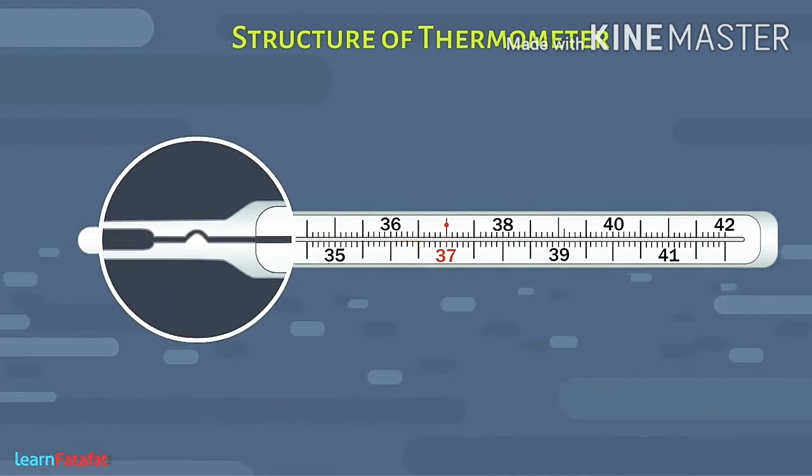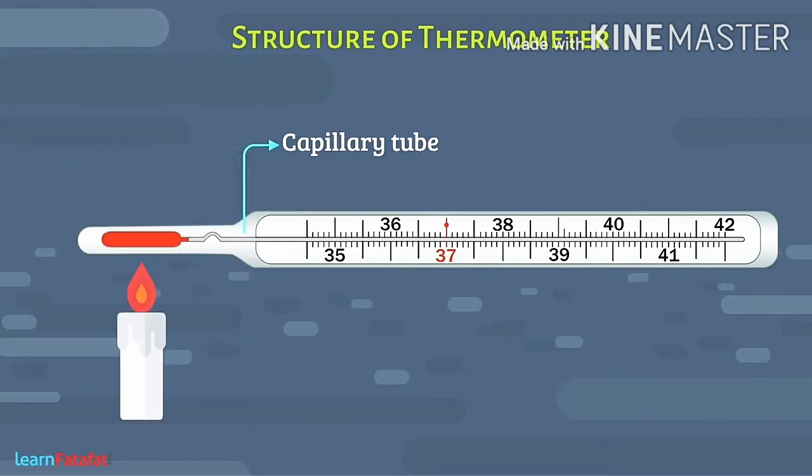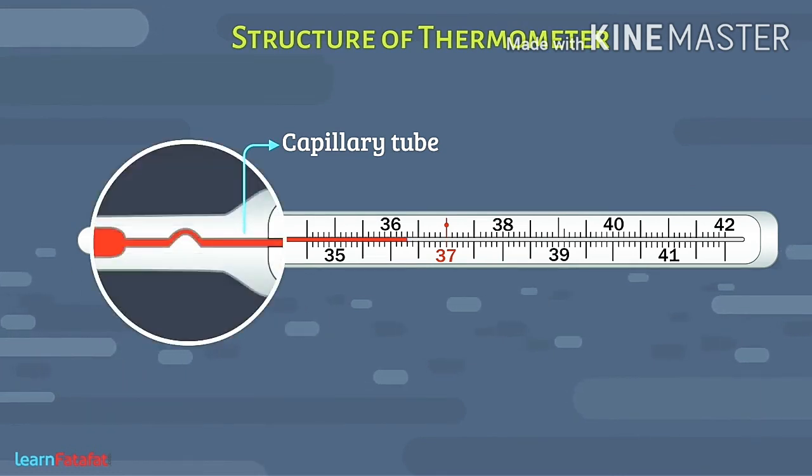Inside the thermometer, there is a thin tube which is called the capillary tube. When the temperature rises, the mercury level also increases, and the bending of this capillary tube stops the back flow of mercury level so that we can measure our temperature.